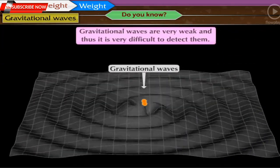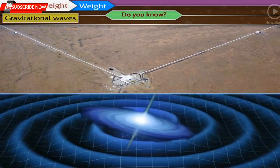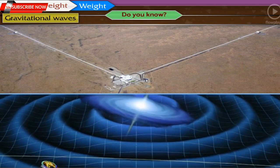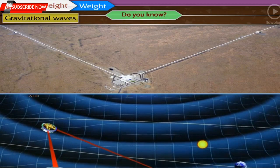These waves are very weak and thus it is very difficult to detect them. Scientists have constructed extremely sensitive instruments to detect the gravitational waves emitted by astronomical sources.